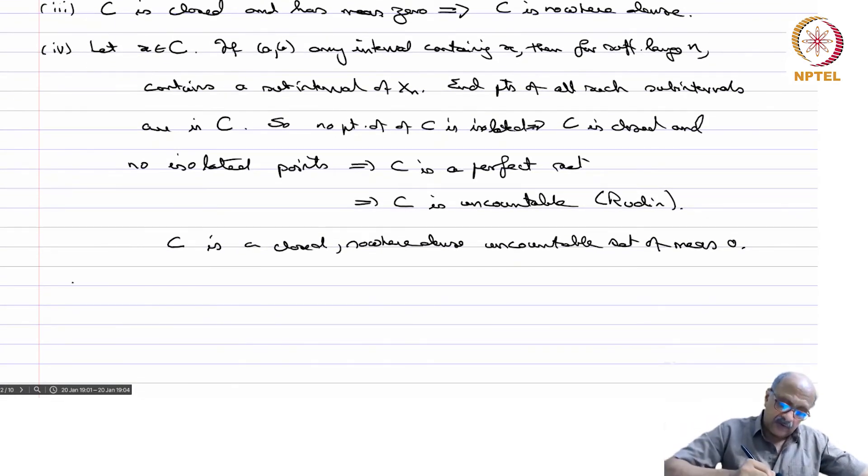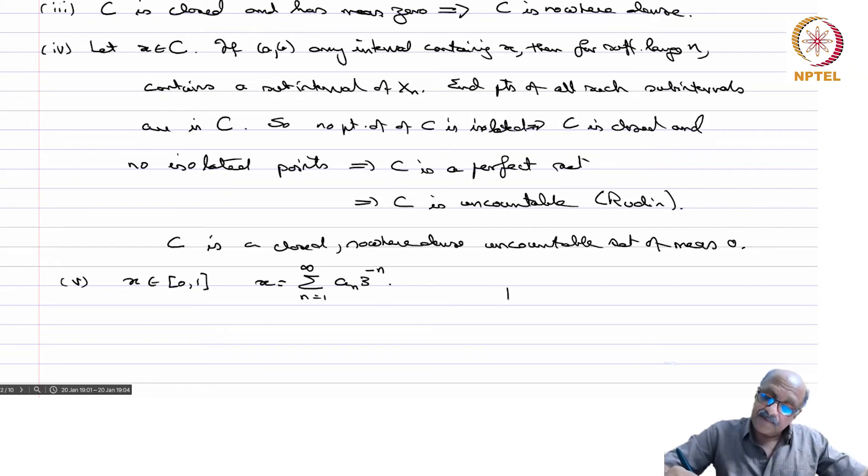Now we can also show that without using this perfectness, we can also show that C is uncountable in the following way. You take any x in [0,1] and write its ternary expansion. That means x equals sigma n equals 1 to infinity of an/3^n. How do you compute this an? You take [0,1], divide it into 3 parts. So if x comes here then a1 equals 0, and here it is 1, and here it is a1 equals 2, because it is 2/3 plus something, here it is 1/3 plus something, here it is something less than 1/3. So a1 will be 0.